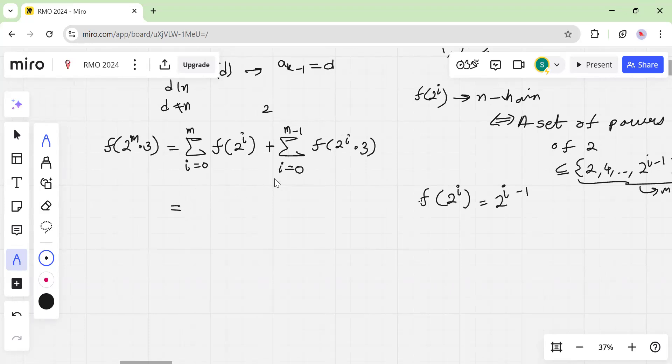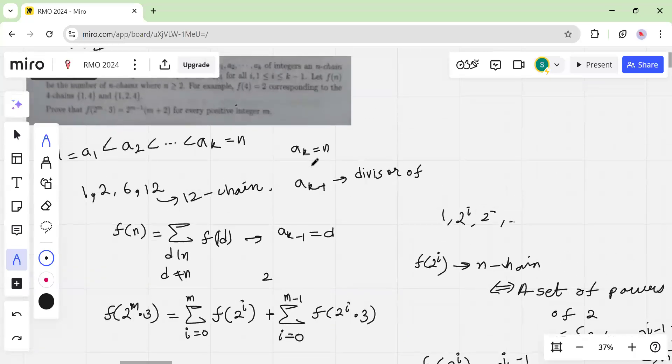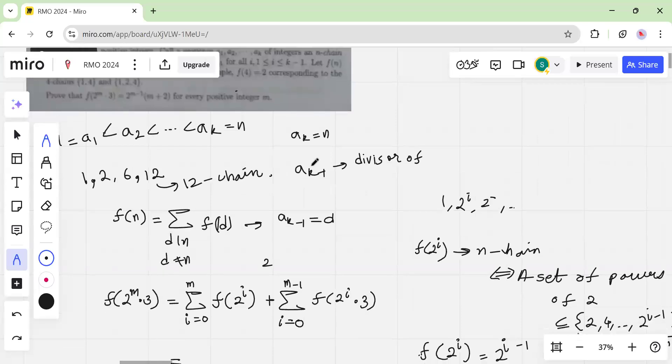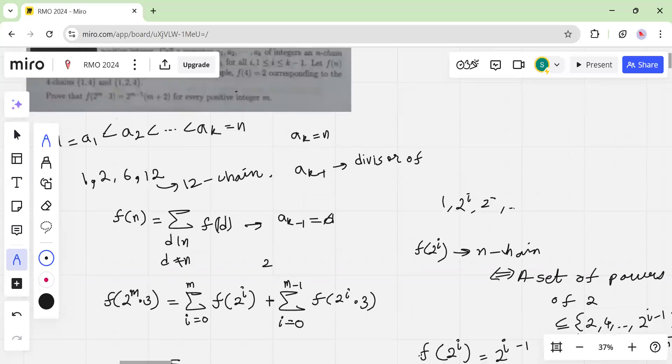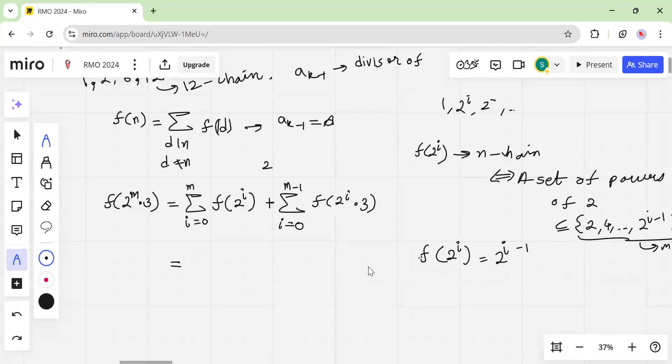So we can do that, but then this thing is a little bit complicated, because over here, we know the value of this for i less than m, but then we will have to sum over these sorts of things. So, okay, so here's the main idea.